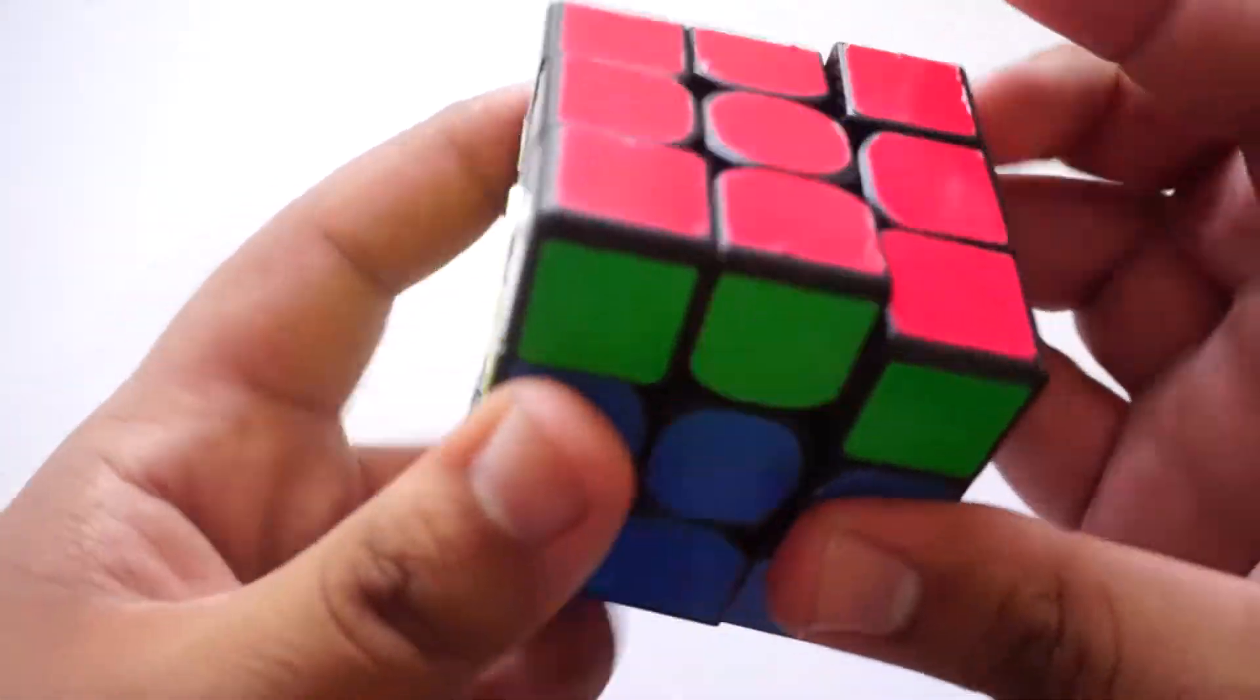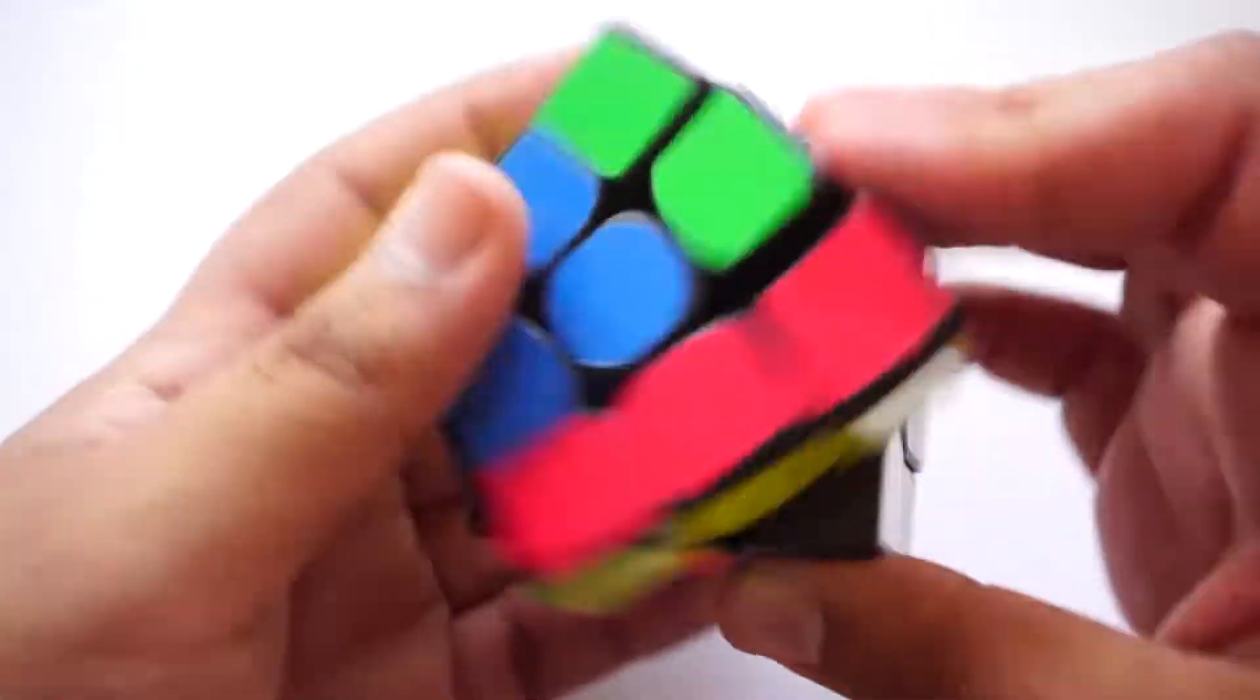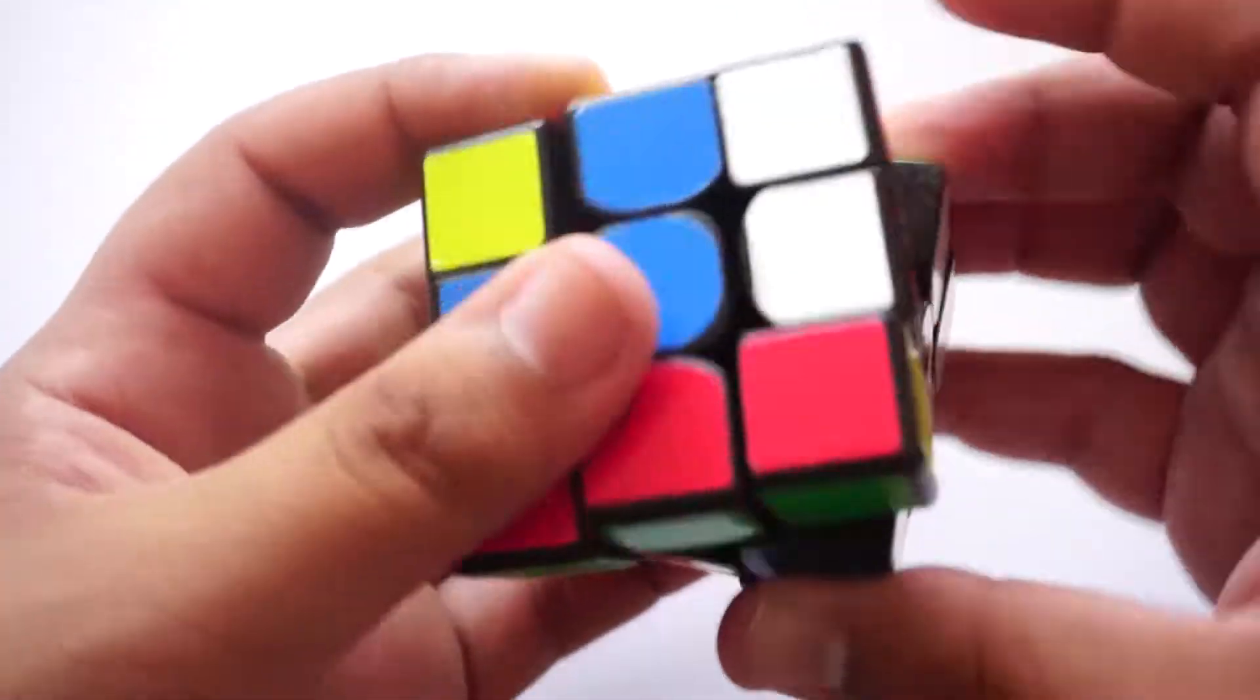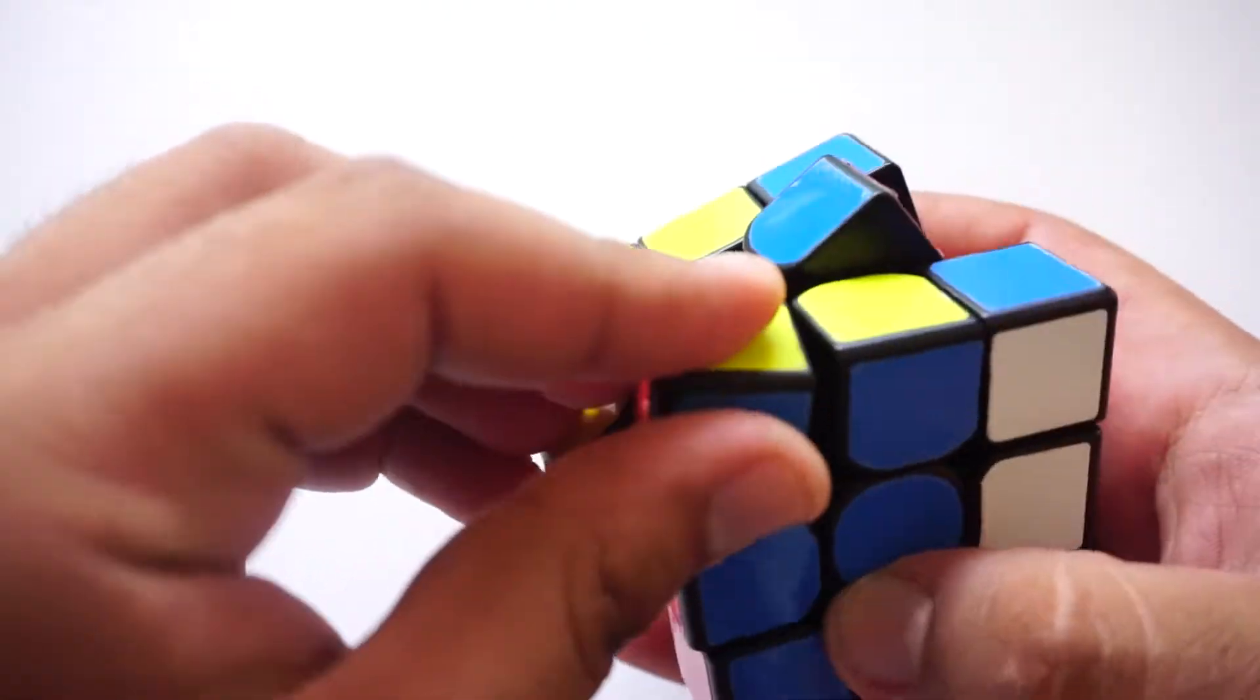Both cubes perform well in the area of speed, but I'm going to have to give it to the Yuxin Little Magic for having better speed. It is a fast cube and very competitive to flagship cubes. This is because of the mechanisms which we'll get to in a little bit.